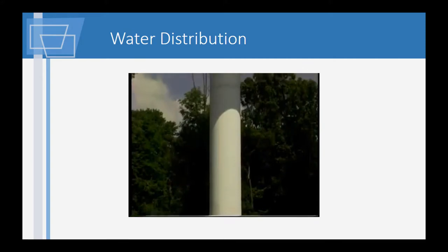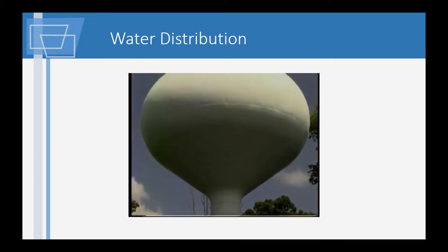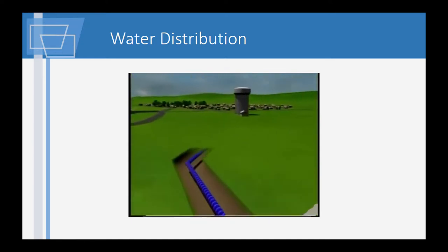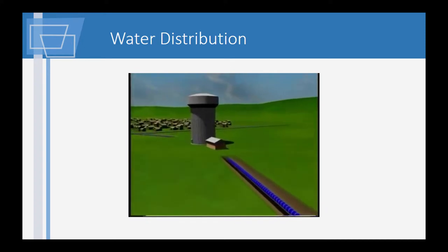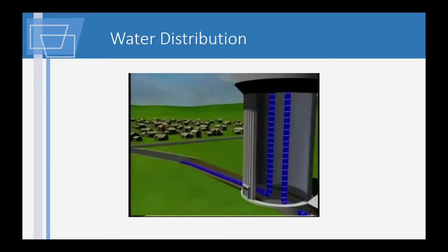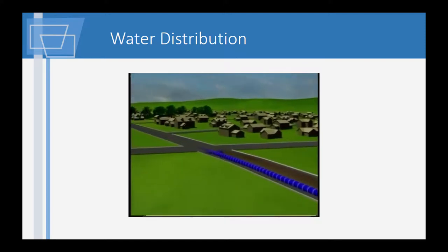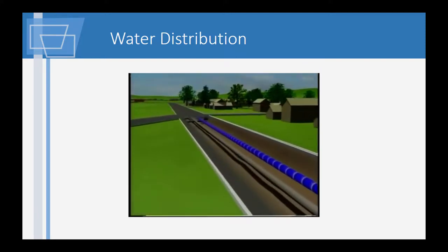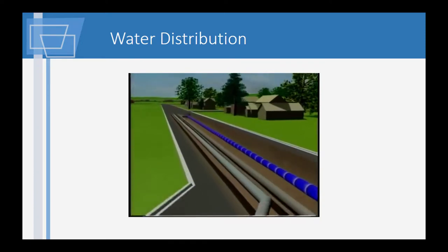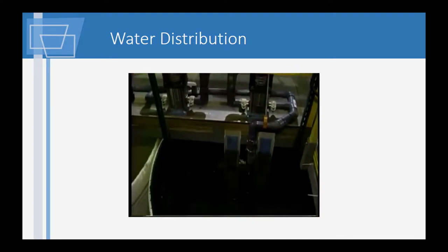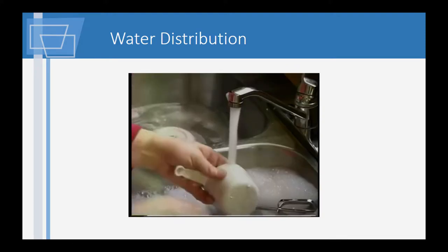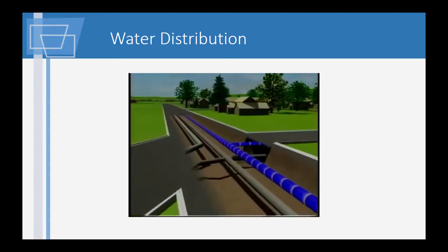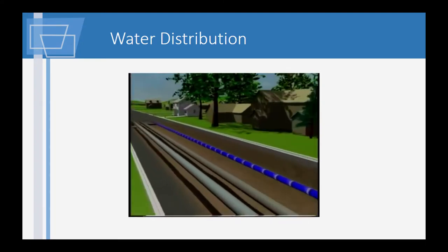Once ready, the water moves from the treatment plant to our homes. Drinking water is carried through large pipes into the water main system for distribution. Water service mains and service lines are buried at least four feet underground to prevent the water from freezing. Once water is in the water mains, it is delivered to all parts of the service area through underground pipes. Service areas include businesses, industries, commercial and residential customers within the city of Dayton and surrounding suburbs.